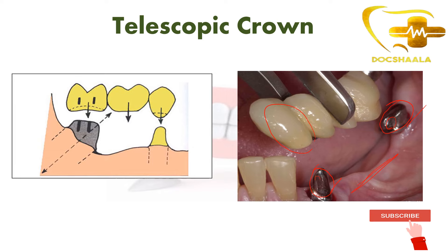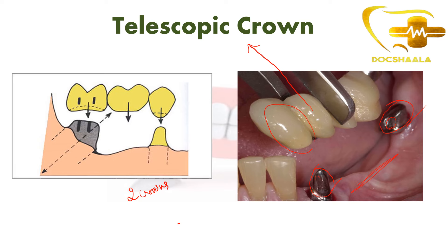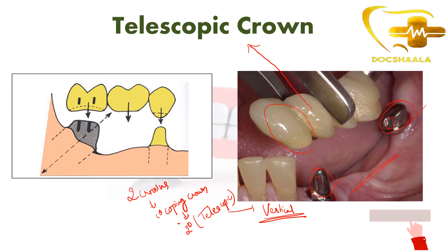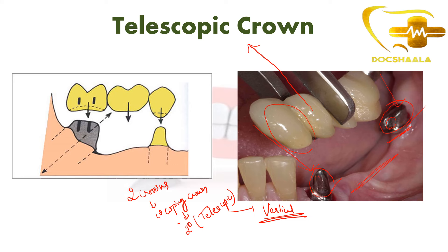In the telescopic crown technique, we should remember that we have two crowns: the first is a primary coping crown or retainer, onto which we then have a secondary crown — the telescopic crown itself. This telescopic crown is inserted in a vertical direction, which is very important to overcome the disadvantages associated with a tilted mandibular molar. When inserted with a vertical path of insertion, we can minimize the rocking of the denture and increase denture stability.